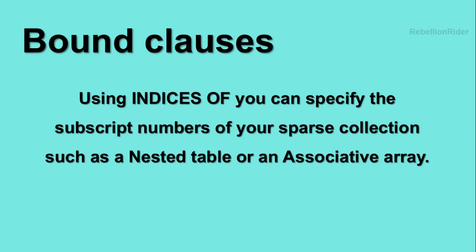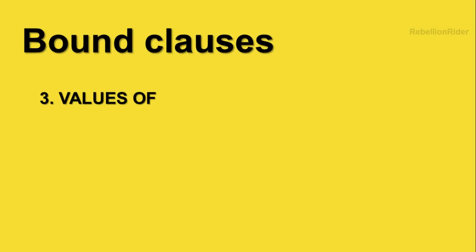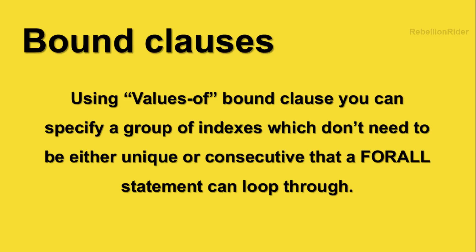In case you want to use the FORALL statement with very specific individual elements of a particular collection, you can use the third bound clause, VALUES OF. Using VALUES OF, you can specify a group of indexes which don't need to be either unique or consecutive that a FORALL statement can loop through.